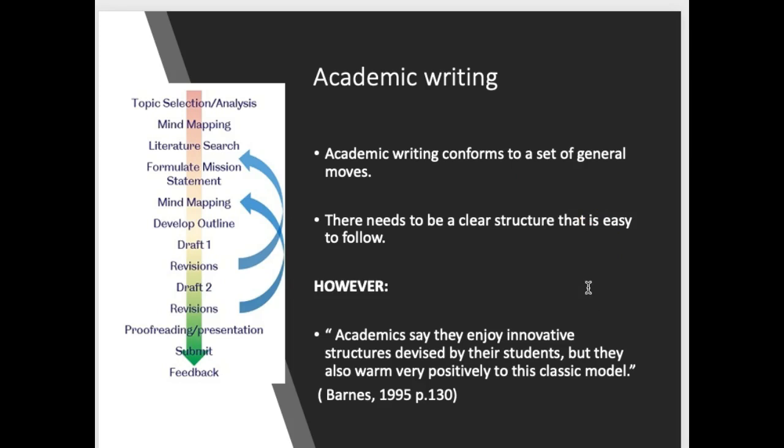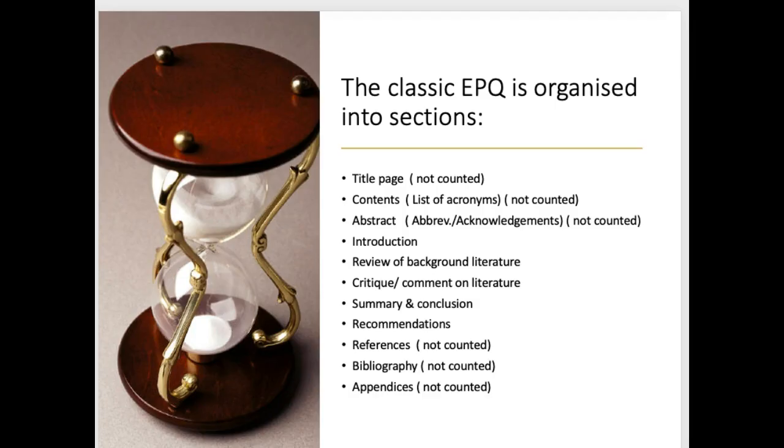Now firstly, I'm going to begin by talking about academic writing itself. There is a classic structure of how a dissertation should look, which usually involves things like a literature review and methods. You can use a traditional structure, but the good thing about AQA is they say you are allowed to structure the report in any way you like. I've got a quote from Professor Barnes: academics say they enjoy innovative structures, so you can be creative, but they also warm very positively to the classic model.